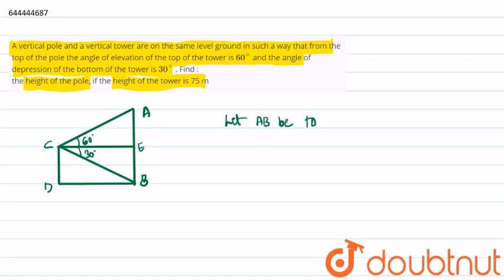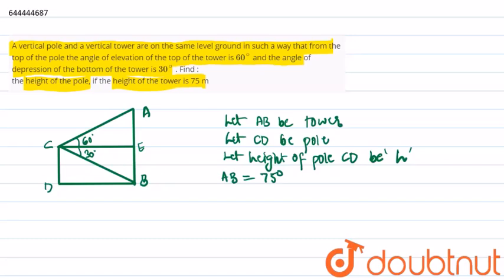Let height of pole CD be denoted as h, and we have been given that AB is 75 meters. It has been given to be 75 meters.